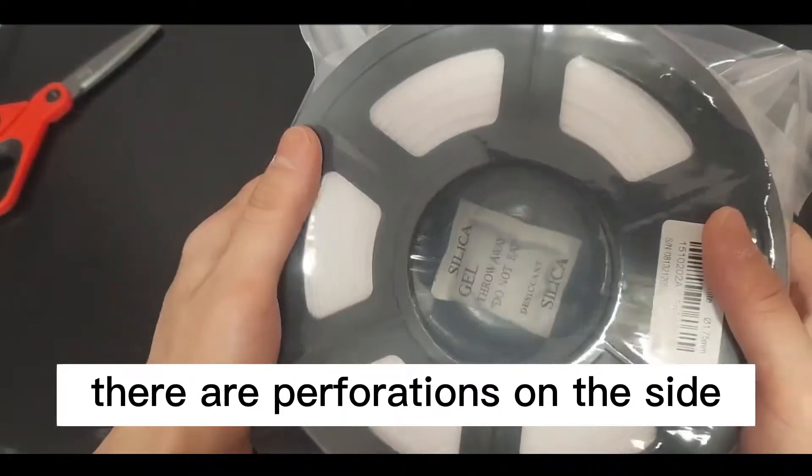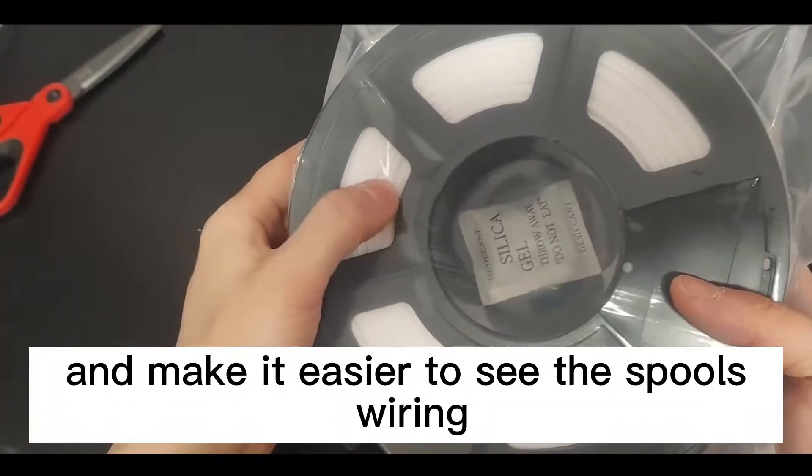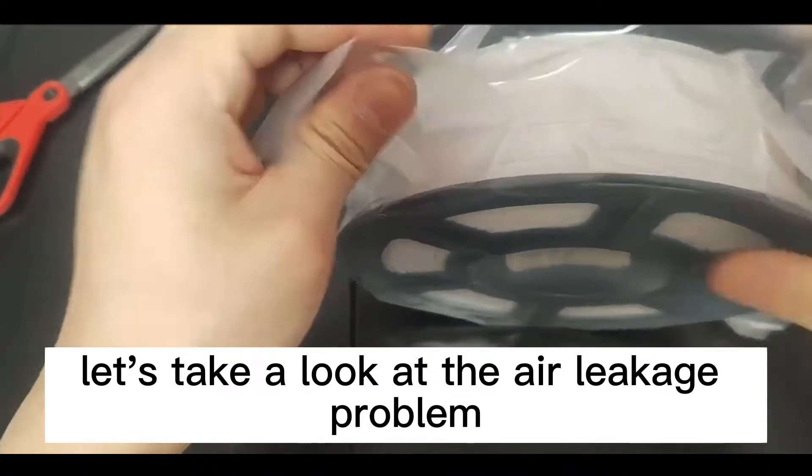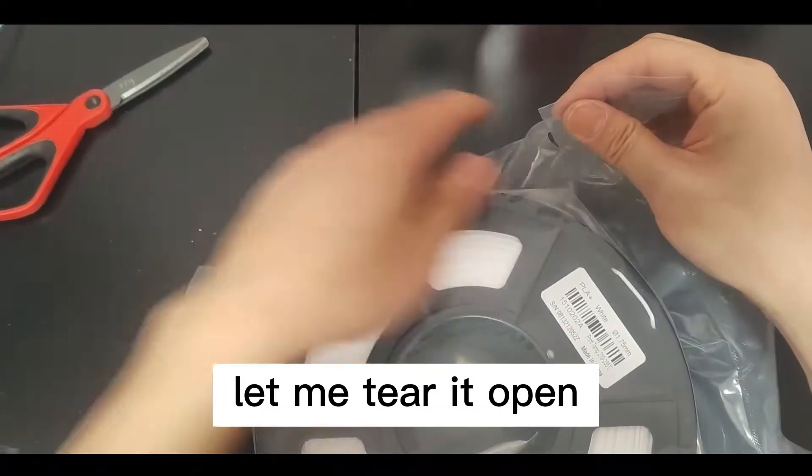There are perforations on the side to reduce the weight of the spool and make it easier to see the spool's wiring. Let's take a look at the air leakage problem. The packaging has slight air leakage. Let me tear it open.